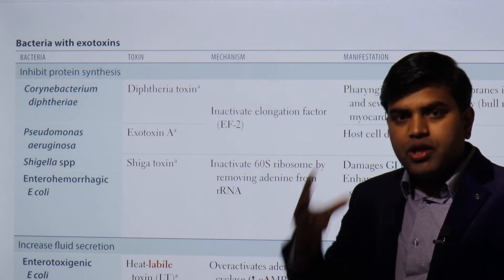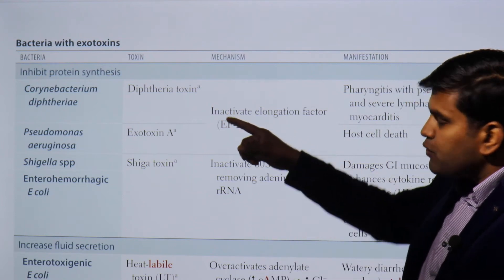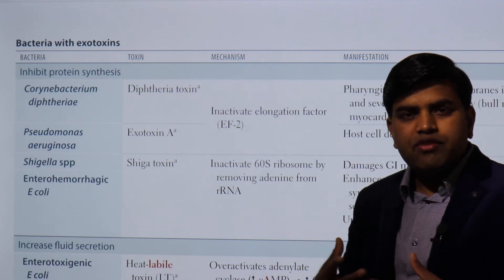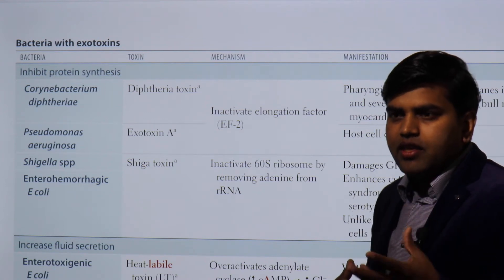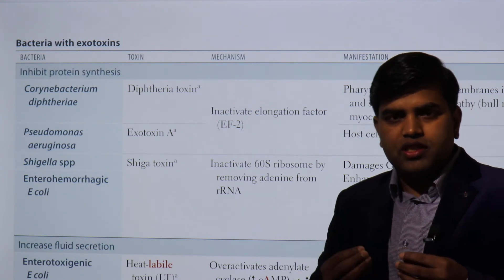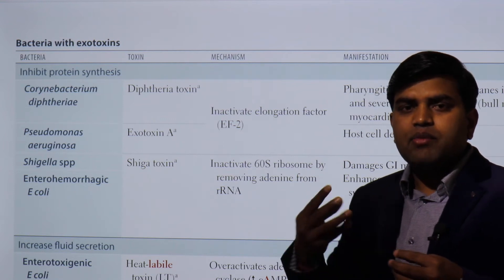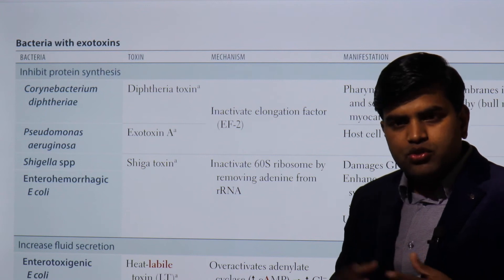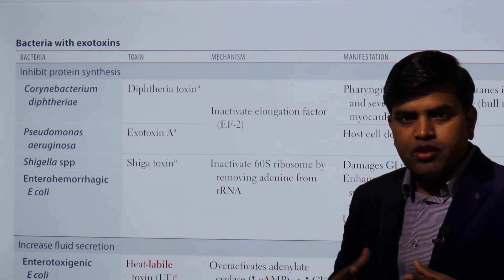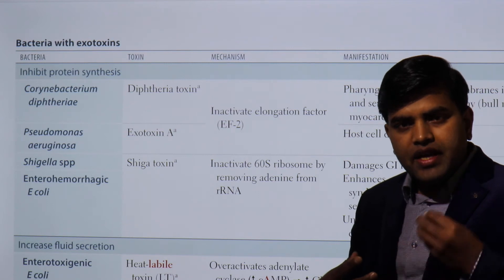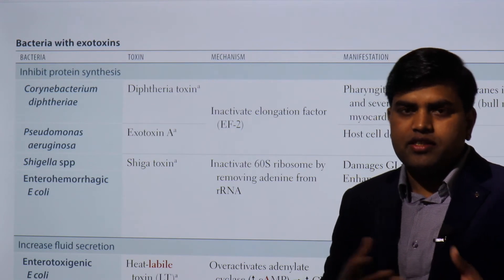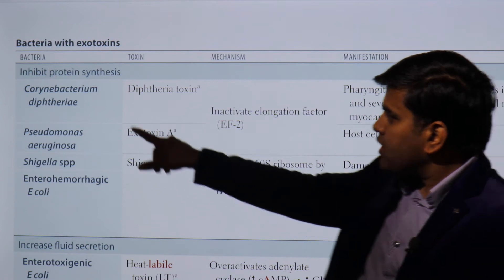Exotoxins that inhibit protein synthesis work by blocking enzyme or protein production in the body. Normally, cells produce enzymes and proteins — for example, liver enzymes or digestive enzymes. If protein synthesis is inhibited, the enzyme produced will be faulty or incomplete, unable to perform its required function. Any cell whose protein synthesis is inhibited will lose its functional capacity.